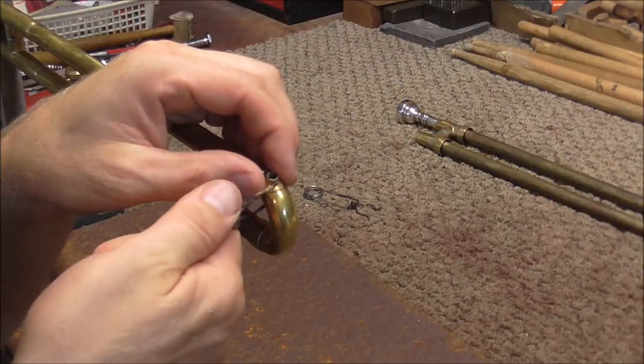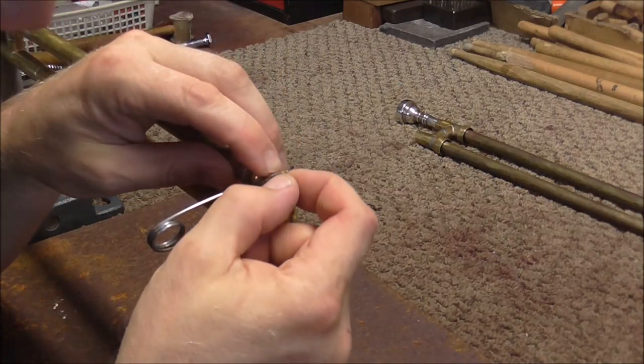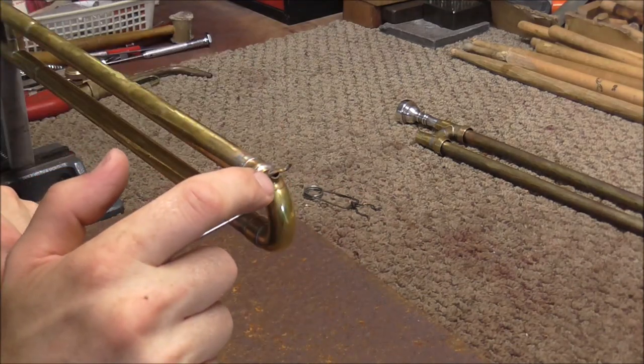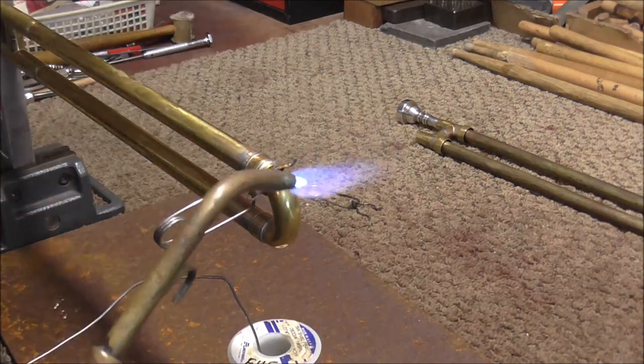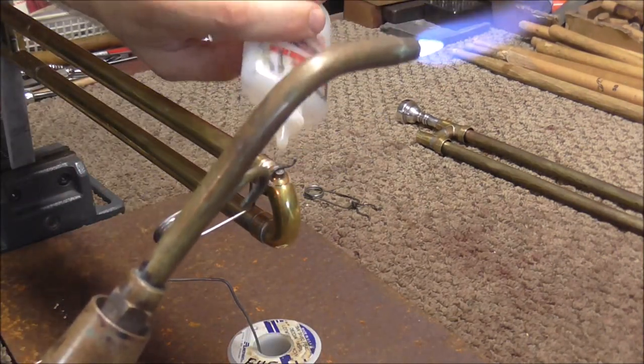I'm going to put the water key on this side of the slide, and put that in the expander just to hold it. I'm not expanding it. I'm just holding it. I'm going to solder on the water key nipple first. I'm putting it where it needs to go, and then I'm clamping it down with a solder clamp.